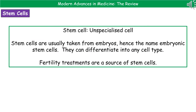The second advance in medicine is the use of stem cells. A stem cell is an unspecialized or undifferentiated cell. We usually take these from embryos, referring to them as embryonic stem cells. Embryonic stem cells can differentiate into any cell type, whereas adult stem cells can only differentiate into a limited number of cell types. One of the main sources of embryonic stem cells is fertility treatments.